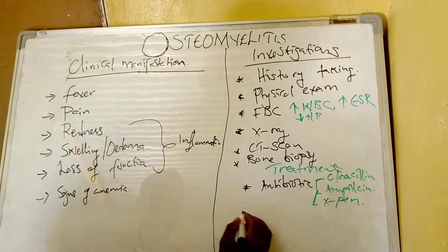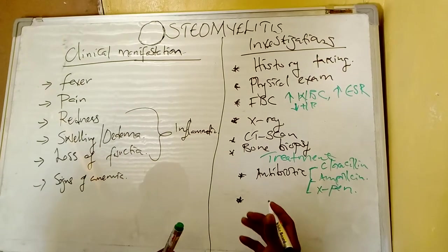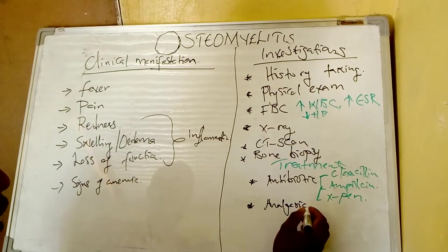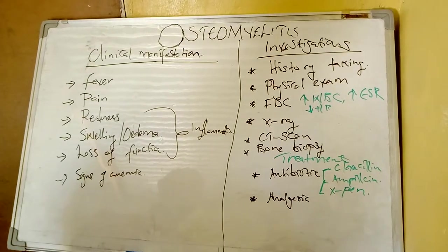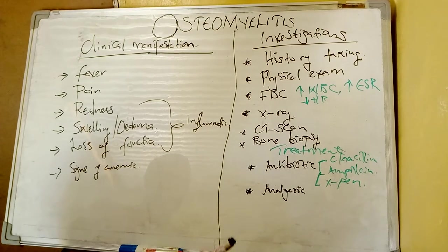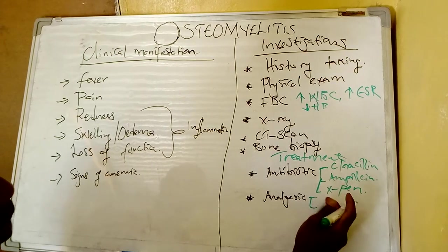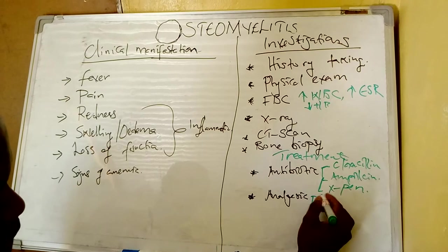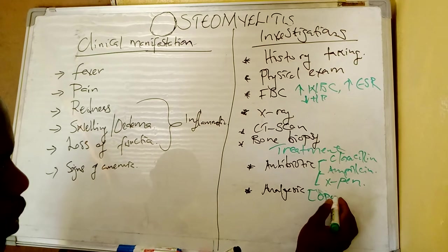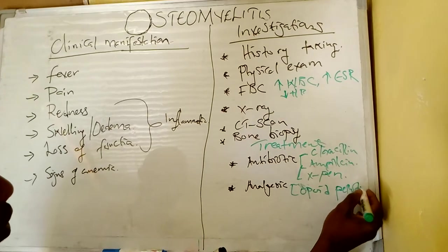Remember that this patient is complaining of pain, so you need to give analgesia. The type of analgesic — remember this is severe pain. If the patient is having severe pain, you give an opioid analgesic, such as pethidine.